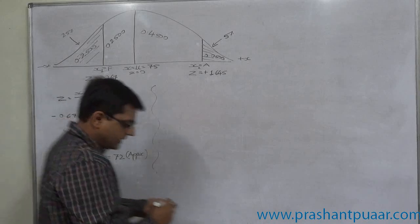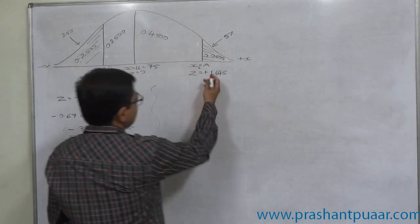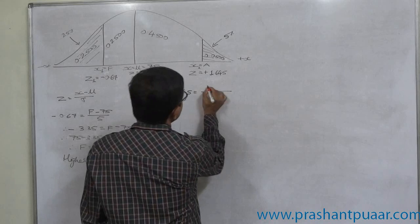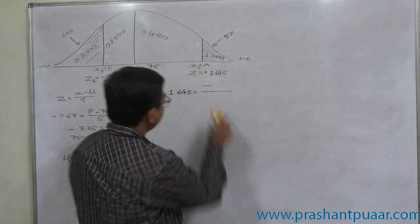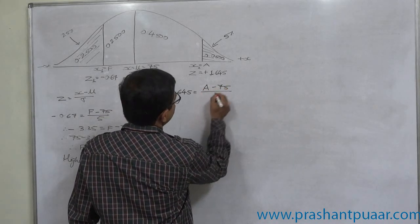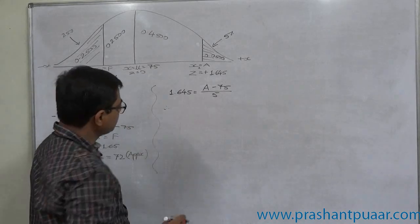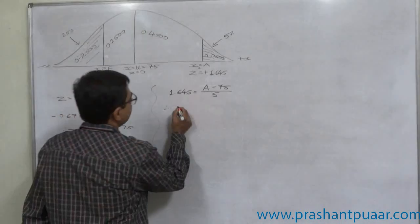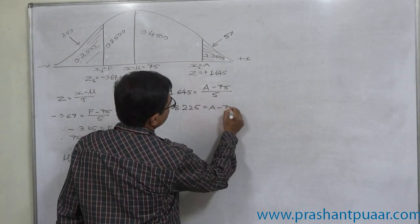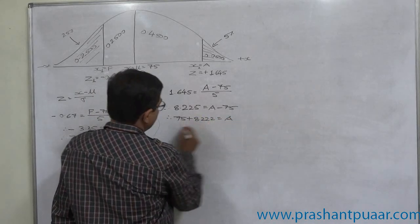In the same way we can find lowest A. Here 1.645 equals x, that is lowest A, minus mean 75 divided by standard deviation 5. What is the multiplication of 1.645 and 5? 8.225 equals A minus 75. So 75 plus 8.225 equals A.